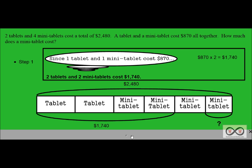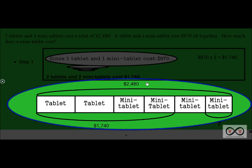We'll take a look at what we know. We know that two tablets and four mini tablets cost a total of $2,480. We've taken that information and put it into this model drawing. There is the $2,480, and that was the price of two tablets and four mini tablets. We also know that a tablet and a mini tablet cost $870 altogether. Our math job: how much does one mini tablet cost?